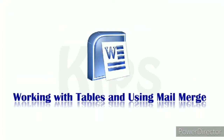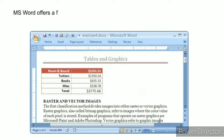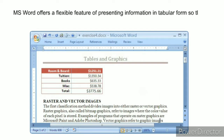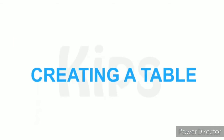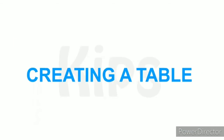With tables and using mail merge, MS Word offers a flexible feature of presenting information in tabular form so that we can organize data efficiently. A table consists of a number of columns and rows.